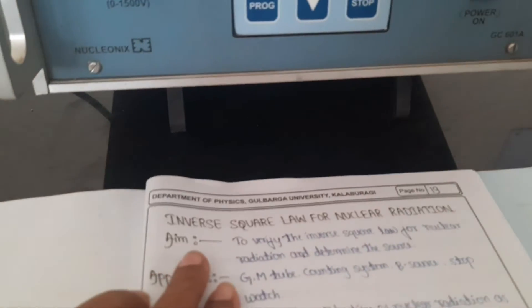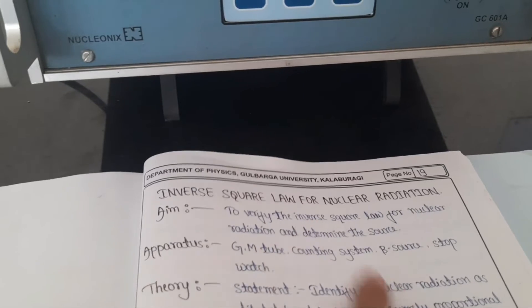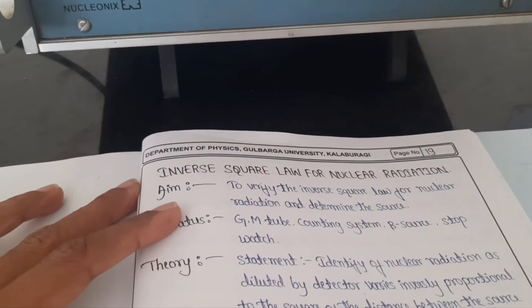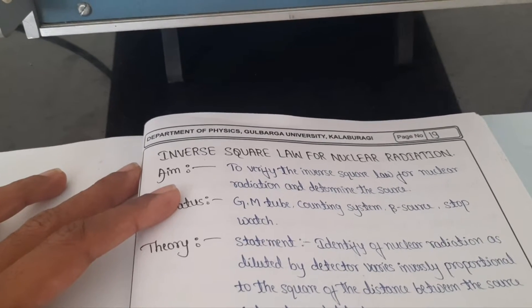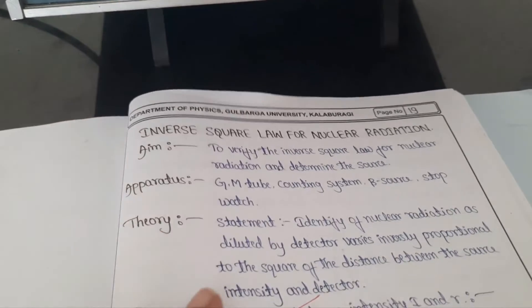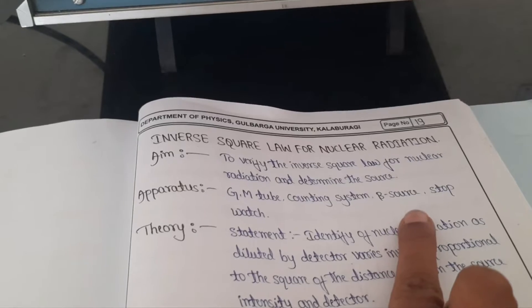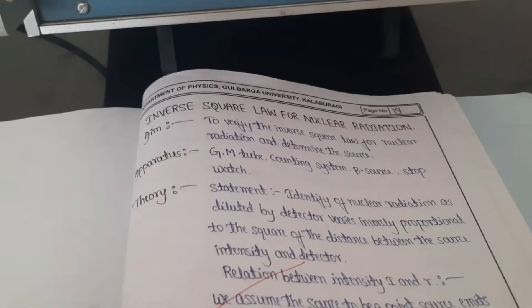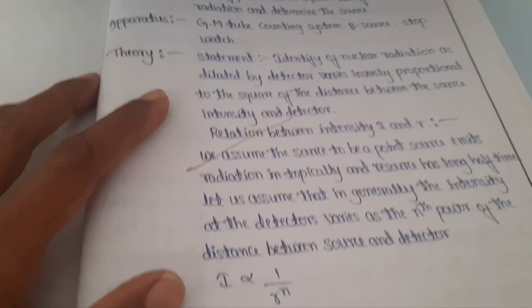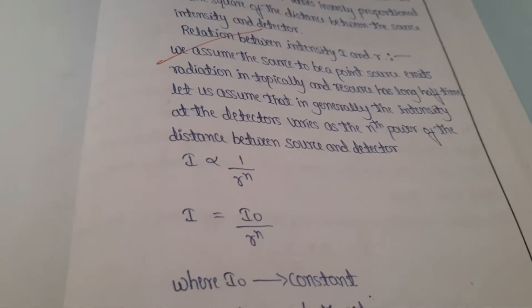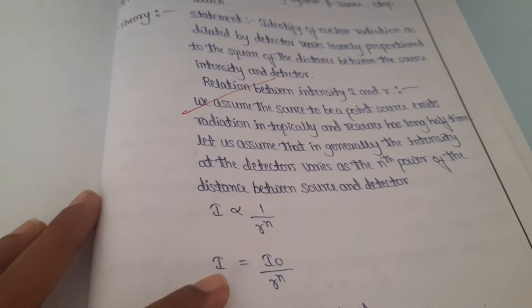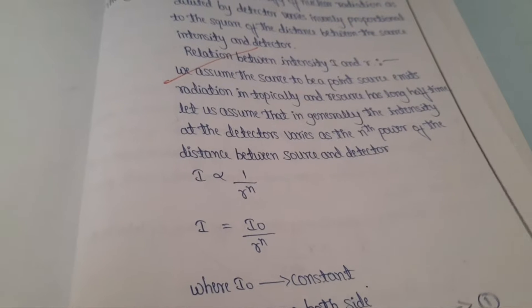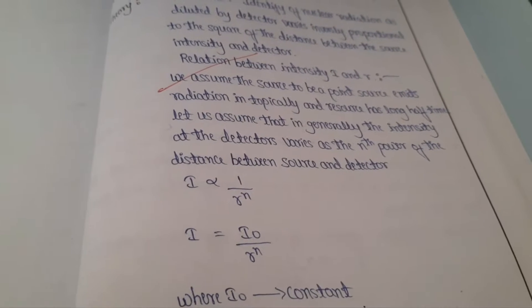First we should understand what is inverse square law. For nuclear radiation, we are verifying the inverse square law and also we are going to determine the source strength. According to inverse square law, intensity is inversely proportional to the square of the distance, so as the distance increases, the intensity decreases.